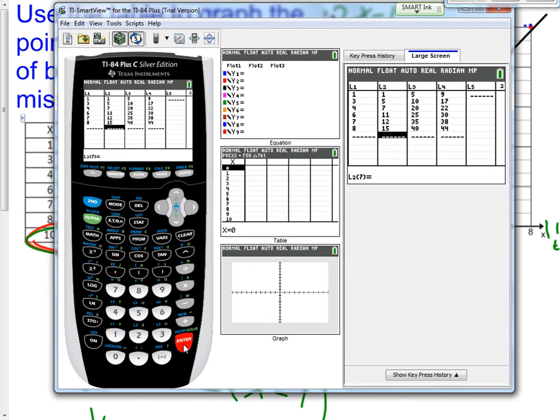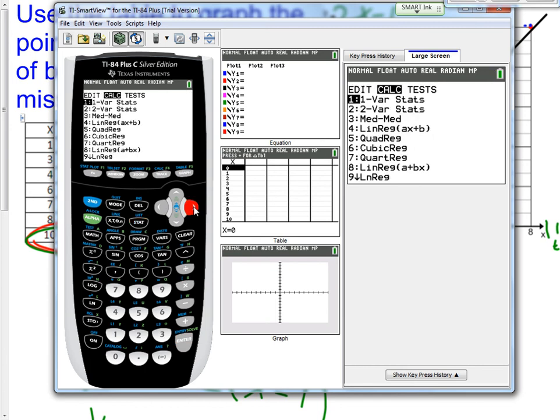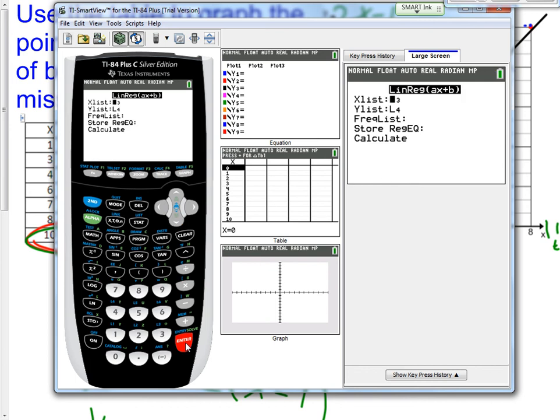What we're going to do is we're going to create a line of best fit. So, go again to stat. Now, go over to calculate. A line of best fit, it's also known as a linear regression line, so it's number 4. So, scroll down to number 4 and press enter.